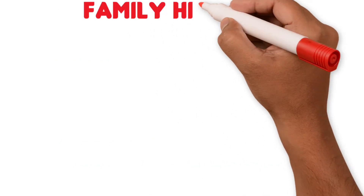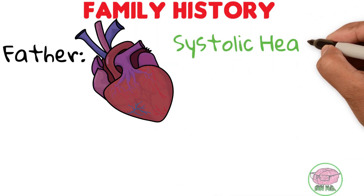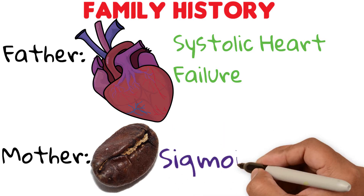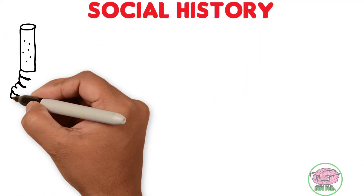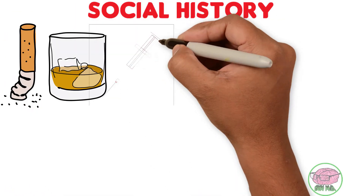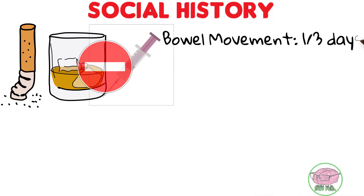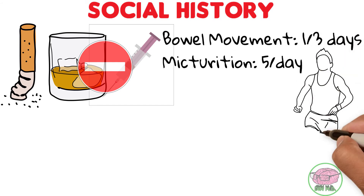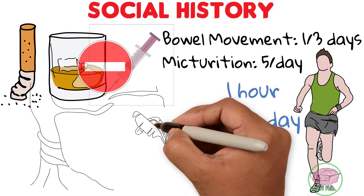Regarding his family history, his father passed away at the age of 60 due to systolic heart failure, and his mother was diagnosed with sigmoid volvulus at the age of 70. She's still alive and lives in Napo. John doesn't smoke or drink alcohol, and he denies consumption of drugs. He has one bowel movement every three days and micturition five times a day. For exercise, he jogs one hour every day and also likes to do some social work.